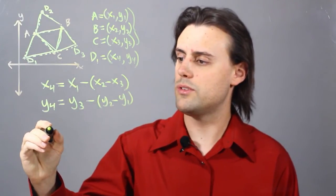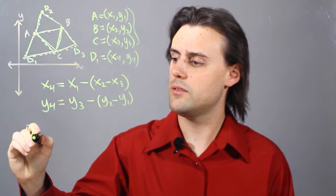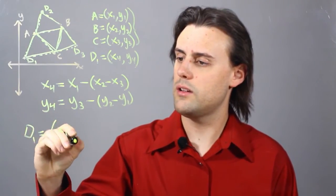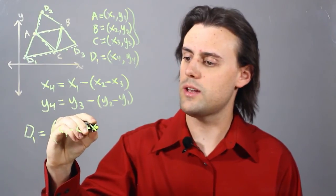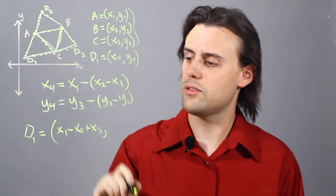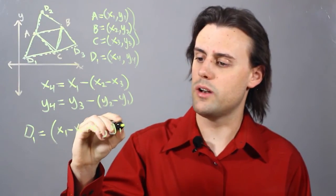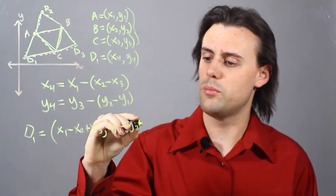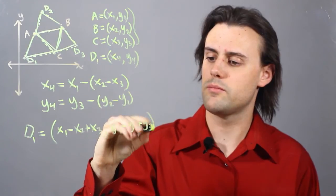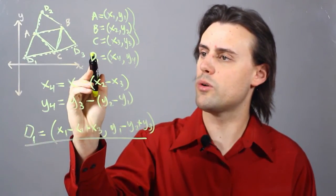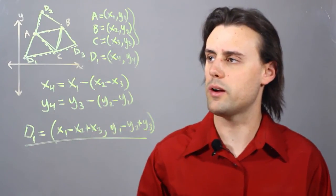So these would simplify then for D1 to x1 minus x2 plus x3 for the x component of the coordinate, comma, y1 minus y2 plus y3. And that would be the last coordinate for one of the three possible parallelograms.